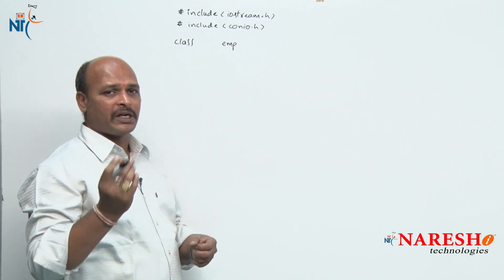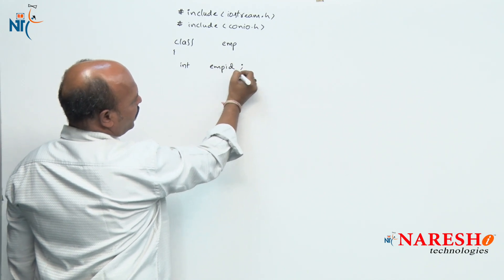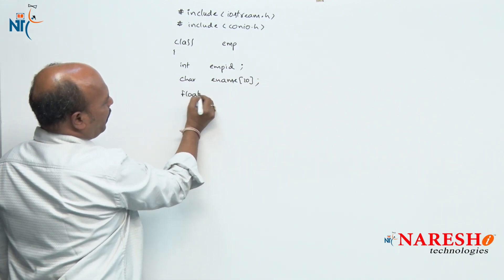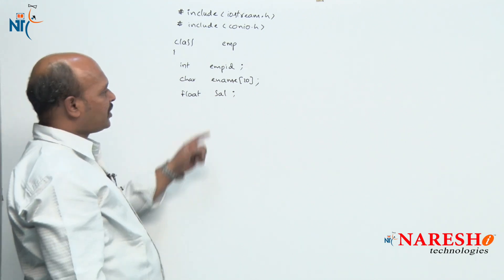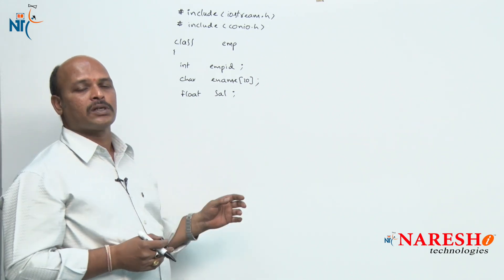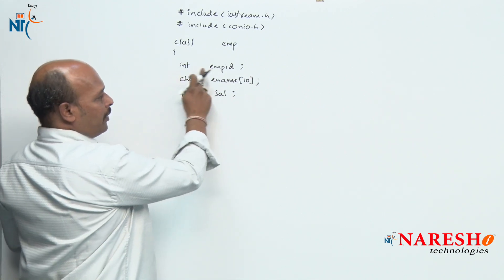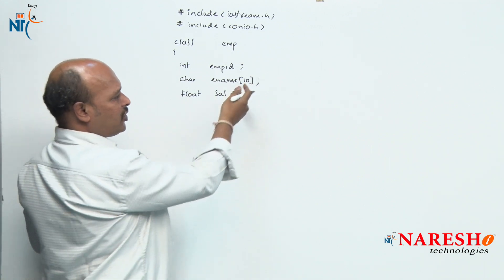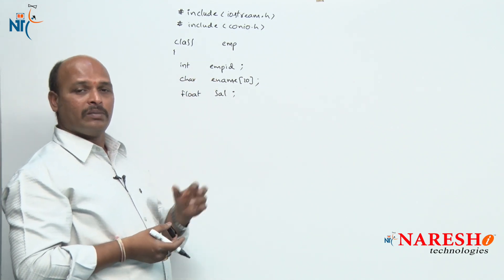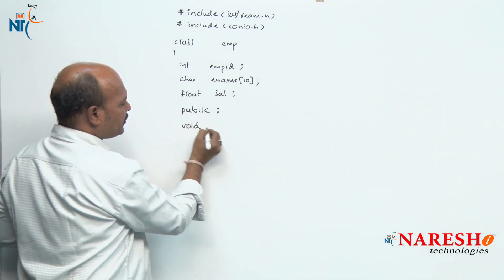The employee class has some data members: int employee id, char employee name, and float salary. These are the three data members. In this example I am going to focus on passing arguments first; in the next example we will discuss how to receive return values. To work with the private data members we need to write member functions within the same class, so in the public area: void getEmp.